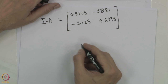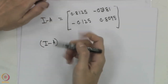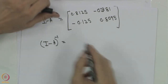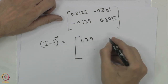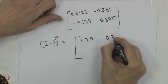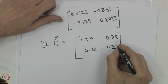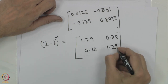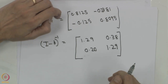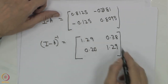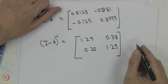Now we can take the inverse of I minus A. I am not going to show you all the steps, but with the rounded-up values you will find that the inverse turns out to be approximately: 1.29, 0.38, 0.20, 1.29. So this is your I minus A inverse, and very interestingly these are the diagonal elements.